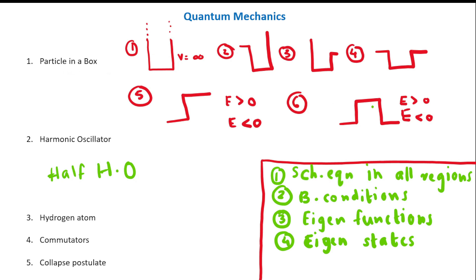In all these questions, you have to see how to write Schrodinger equation in all the regions. For example, here there are three regions: one, two, three. You have to know how to write Schrodinger equation in all these regions - three regions, two regions, three regions. In all these regions, you have to know how to write Schrodinger equations.